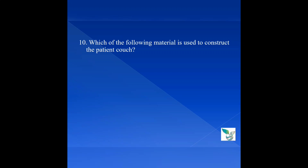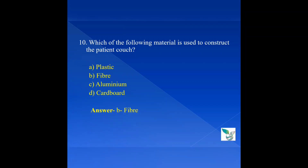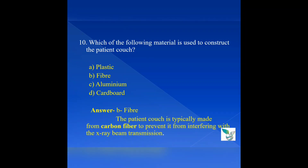Question 10: Which of the following material is used to construct the patient couch? Option A: plastic, Option B: fiber, Option C: aluminum, Option D: cardboard. The answer is Option B: fiber. The patient couch is typically made from carbon fiber to prevent it from interfering with the X-ray beam transmission.